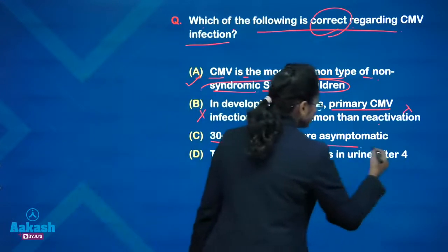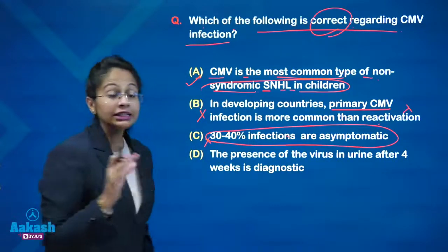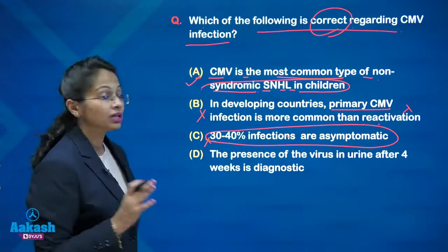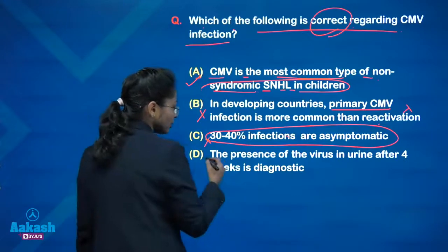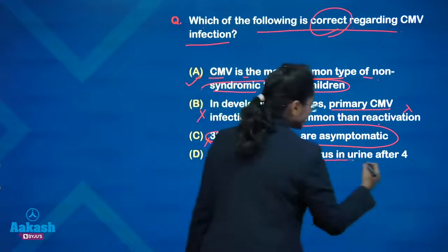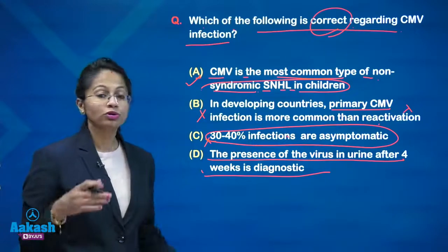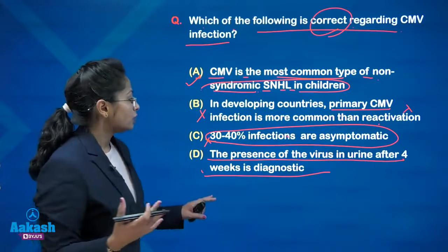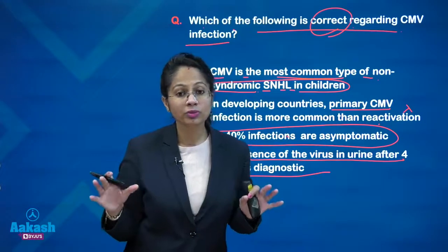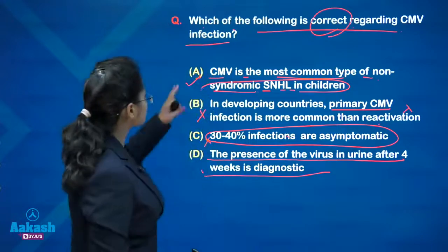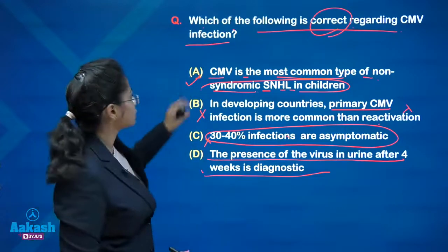Statement three: 30 to 40 percent of infections are asymptomatic — again wrong. 90 percent of patients are asymptomatic. And statement four: presence of the virus in urine after 4 weeks is diagnostic — wrong. You have to look for the virus in urine within 2 to 3 weeks of the birth of the baby. So the right option is A.